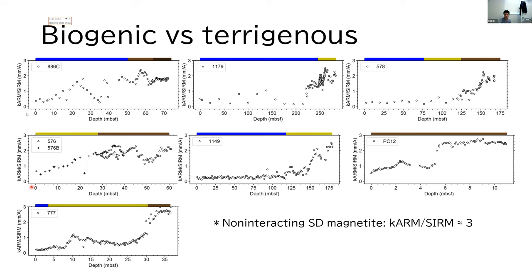These graphs show ARM susceptibility over SIRM. This quantity takes the highest value for non-interacting single domain grains, and for magnetite, the value can reach up to around 3 mm per ampere.